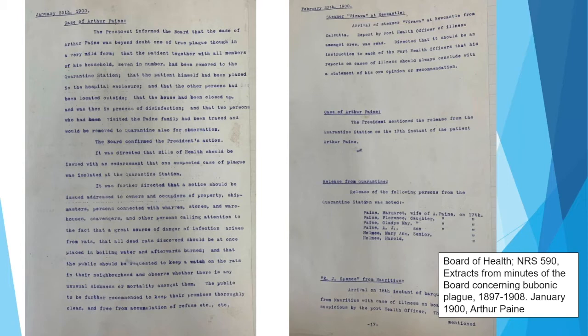Here we've got quite a detailed account of what they did for Arthur Payne. On the same couple of pages, they're talking about a steamer up at Newcastle, and then halfway down, they're talking about letting some of the Payne family out of quarantine. This is on the 20th of February — nearly a month after Arthur Payne was diagnosed.